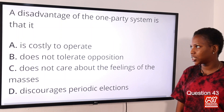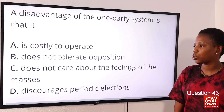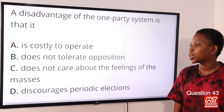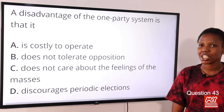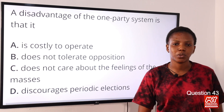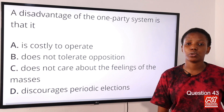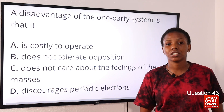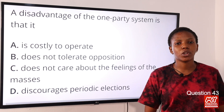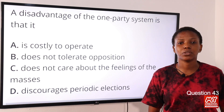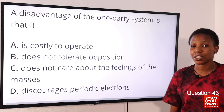Question 43: A disadvantage of the one-party system is that it — Option A: is costly to operate. Option B: does not tolerate opposition. Option C: does not care about the feelings of the masses. Option D: discourages periodic elections. The answer is Option B, does not tolerate opposition. A one-party or single-party system does not tolerate opposition, and this is a major disadvantage. Since it recognizes only one legal party, it would not tolerate another.